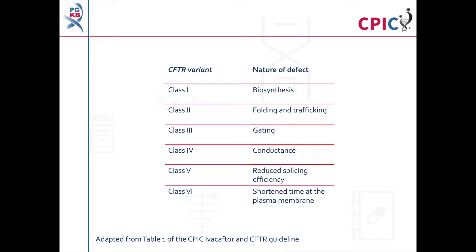The different classes are shown in this table, adapted from Table 1 of the guideline. Ivacaftor is approved for use in patients carrying certain class 3 variants. CFTR proteins with a class 3 variant are able to localise to the cell membrane, but have gating defects so are unable to activate.